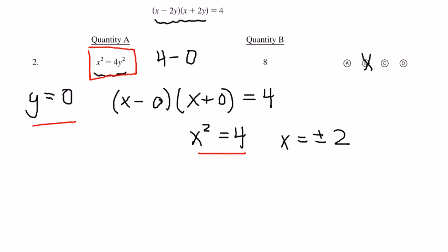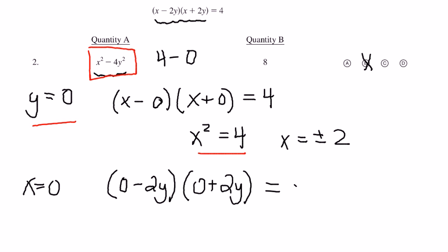Now you could have also perhaps tried x = 0. A quick calculation will tell you (0 - 2y)(0 + 2y) will yield -4y². And if this is supposed to be equal to 4, that's impossible because y² cannot be negative 1.